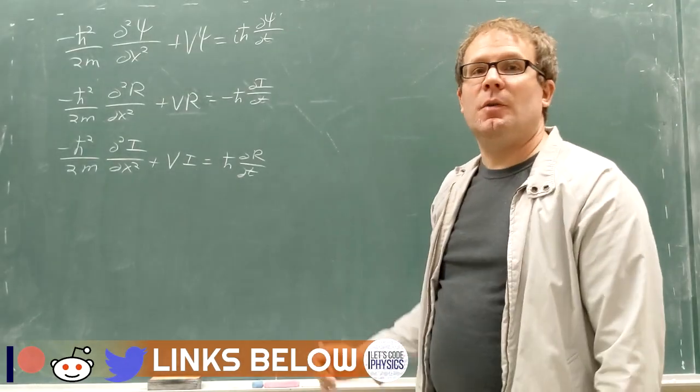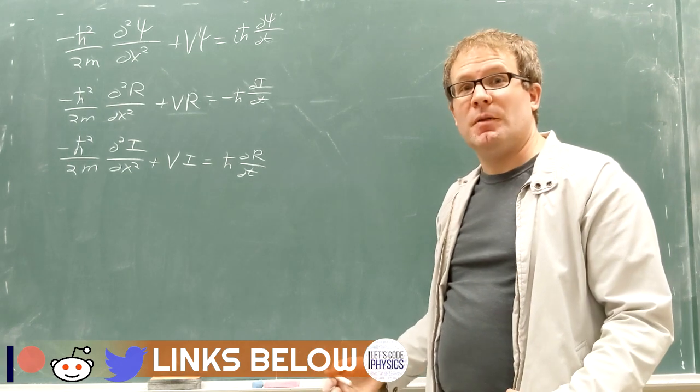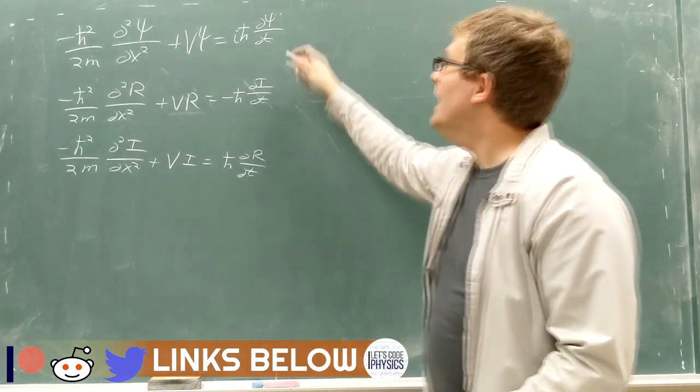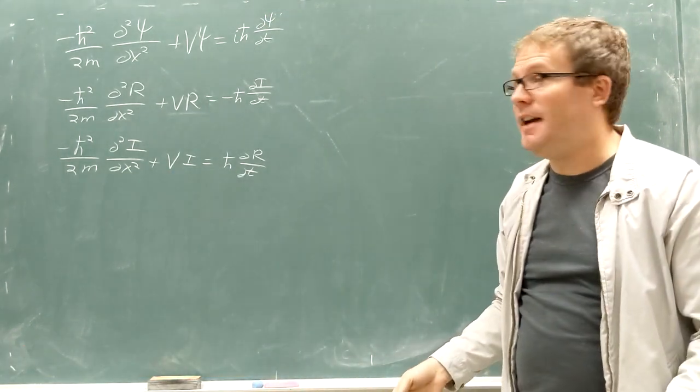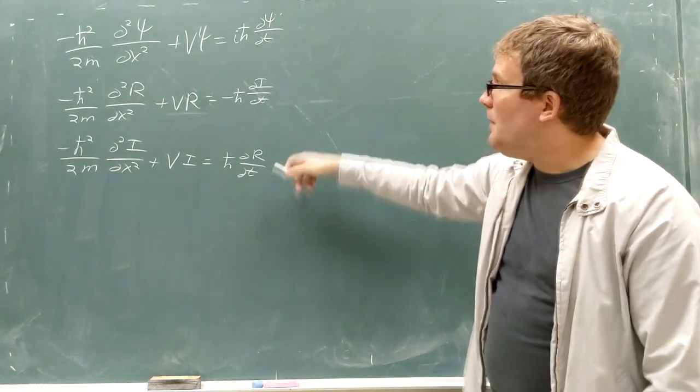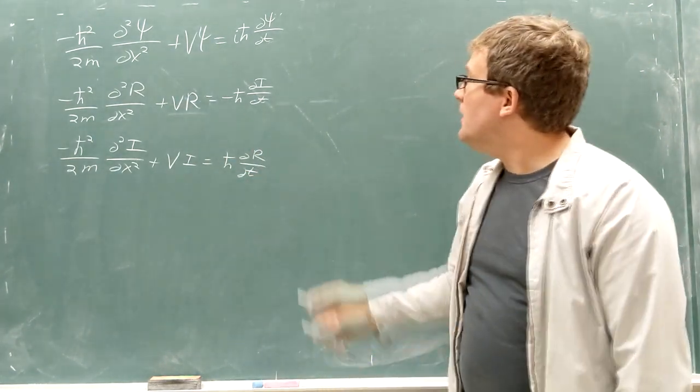All right, so here's the Schrödinger equation. It's the governing principle in quantum mechanics that tells you exactly how psi evolves in time. Then we split that up into real parts and imaginary parts.